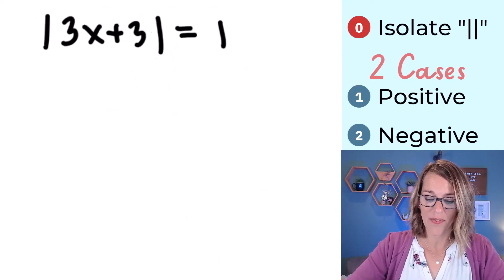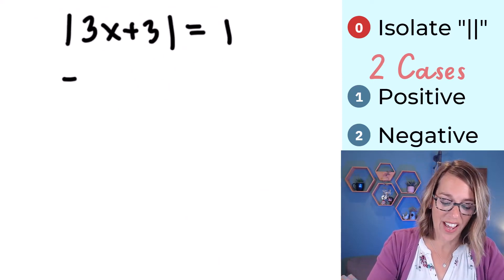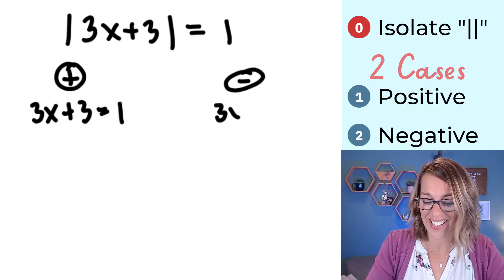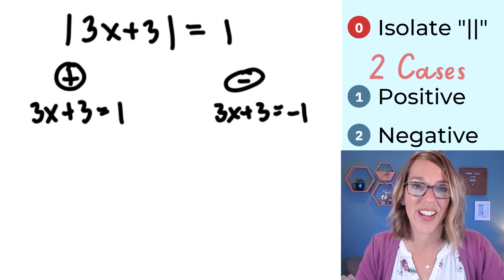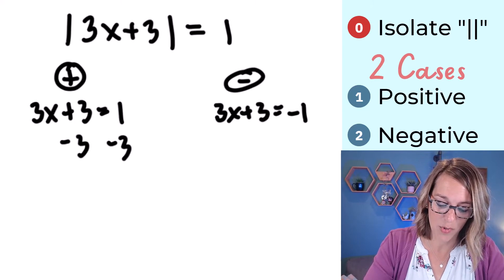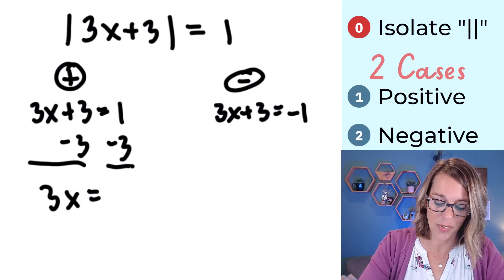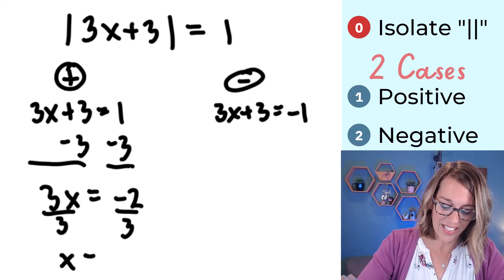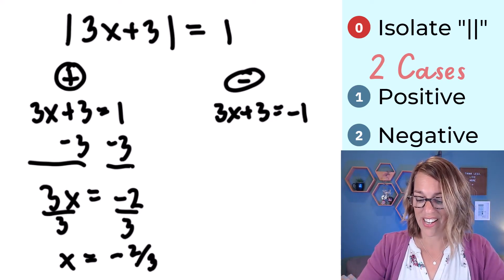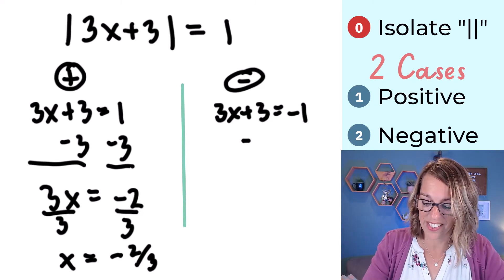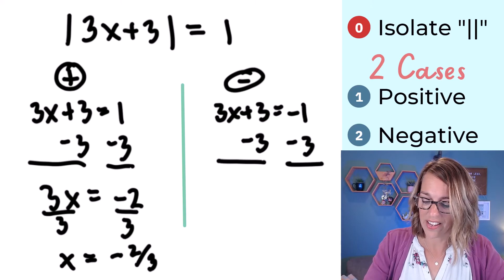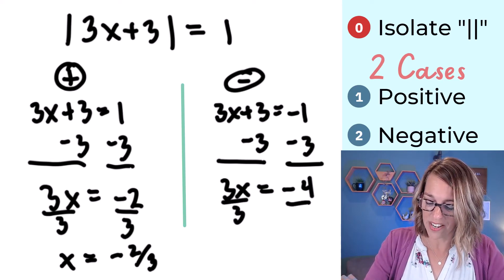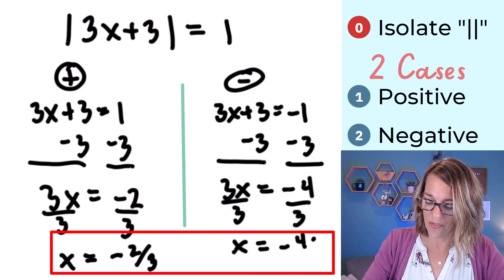Now I have the absolute value of 3x plus 3 equals 1, and I'm ready for my two cases. In the positive case, 3x plus 3 equals 1. Subtracting 3 gives 3x equals negative 2, so x equals negative 2 thirds. In the negative case, 3x plus 3 equals negative 1. Subtracting 3 gives 3x equals negative 4, so x equals negative 4 thirds.